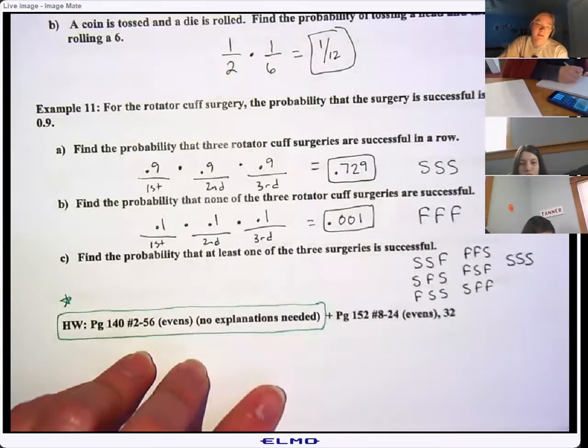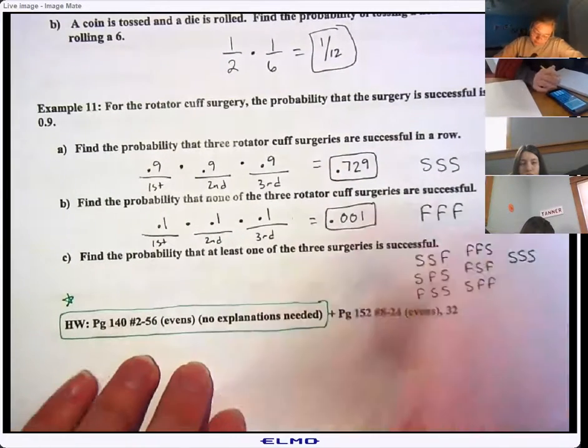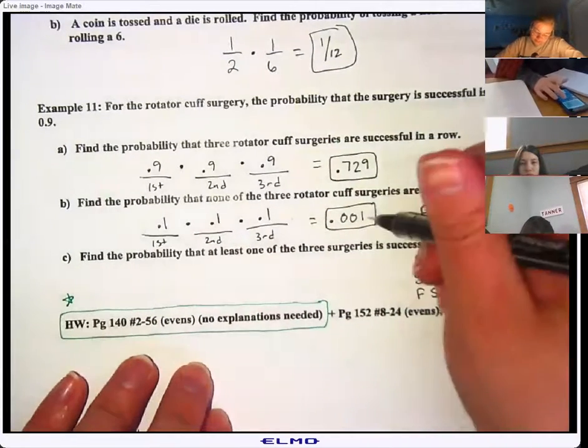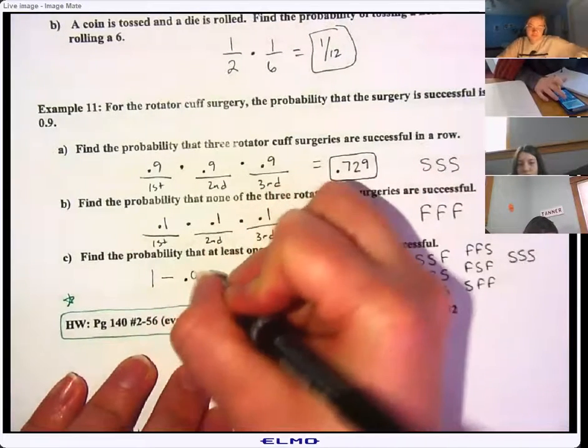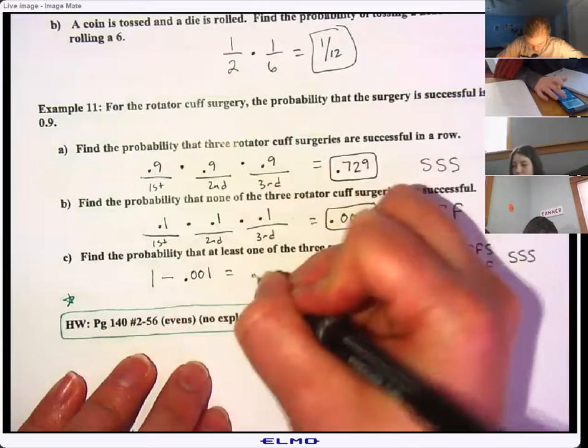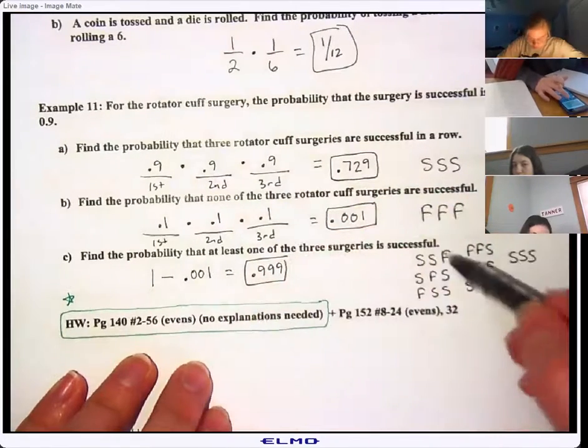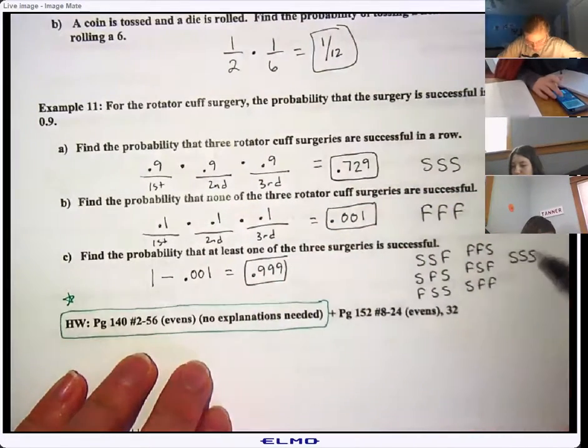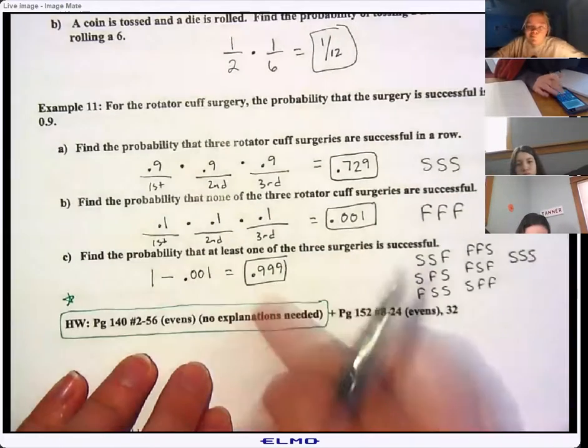So it's easier, remember how we talked about yesterday, it's easier sometimes to find the complement of an event, to find the opposite. So instead, we already found out the probability that they all fail, which is 0.001. So if you just take 100% minus 0.001, that's your answer. Now, if we had found out all of these individual probabilities, these seven different probabilities, and then added them all together, they would have made 0.999.